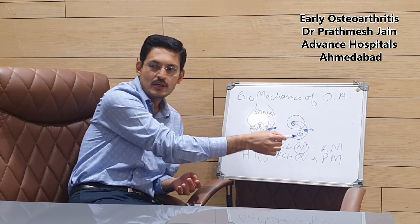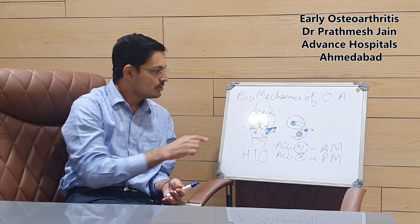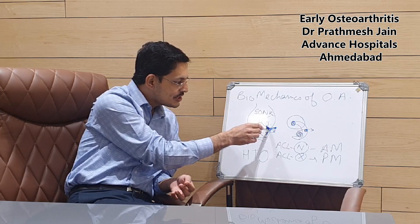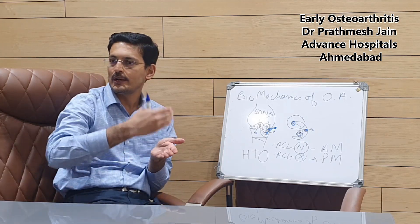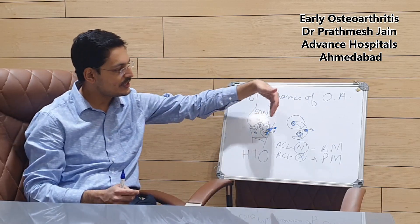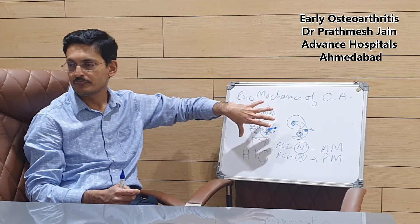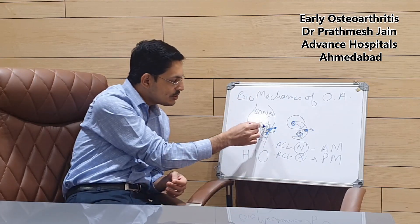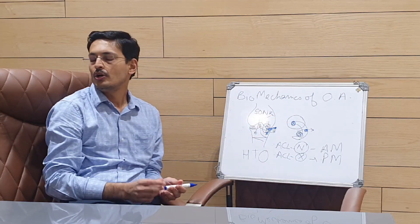Progressing through the stages: if there is a root tear alone, you address the root tear and you are done. If the disease has progressed with root tear and extrusion, you repair the root and repair the extrusion. HTO remains an option if you have a varus knee. If you have a root tear with extrusion and a femoral condyle lesion alone, you can perform root repair and extrusion repair combined with a chondral procedure such as mosaicplasty.